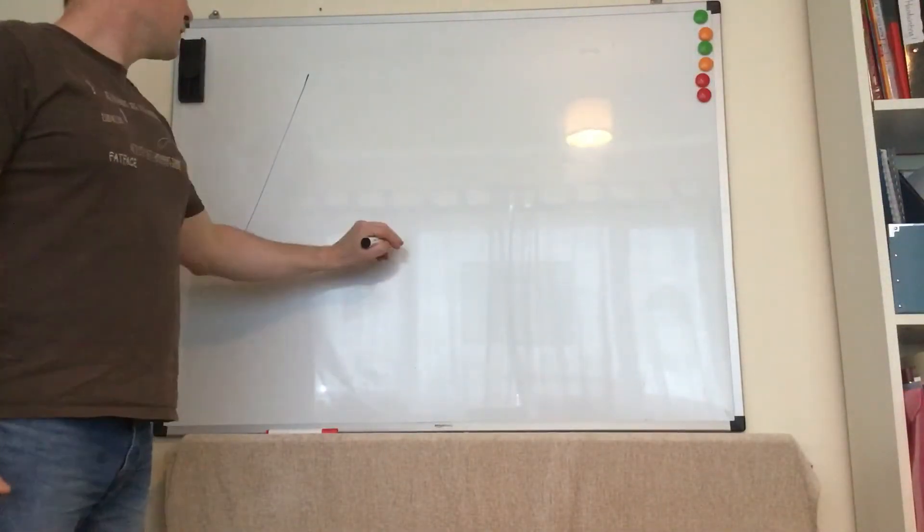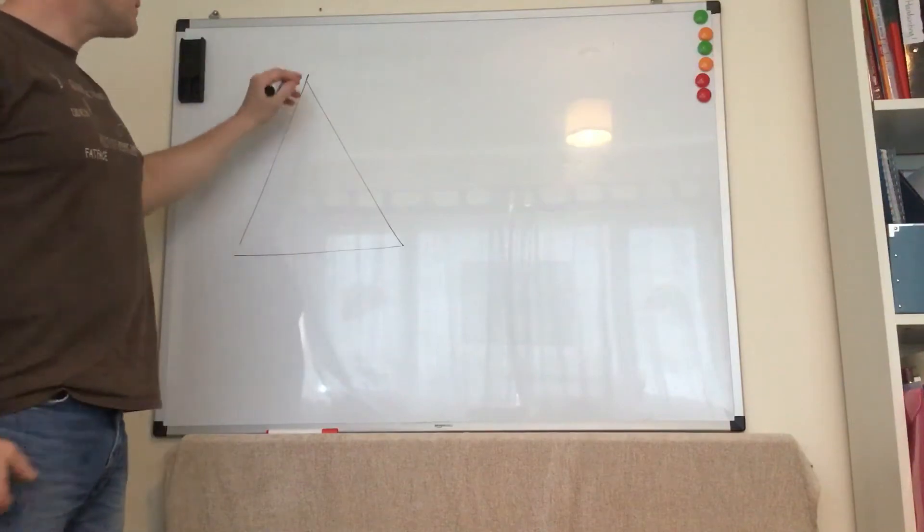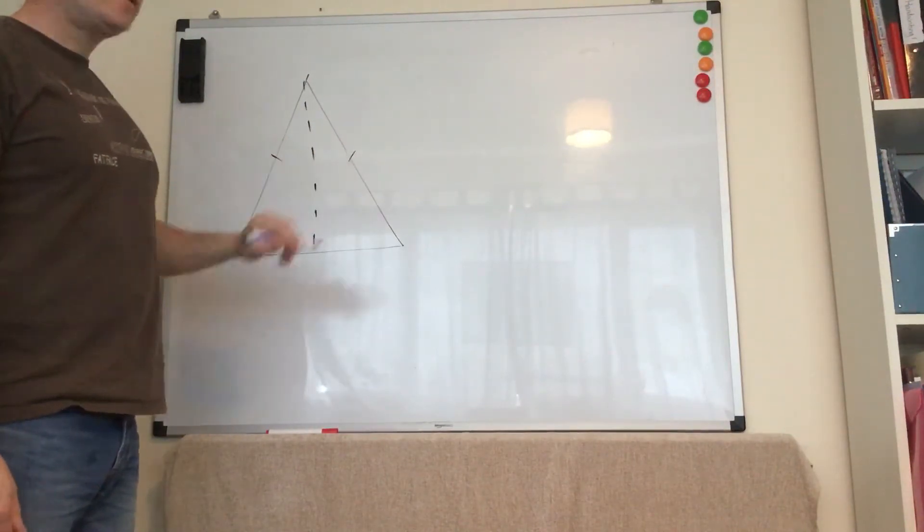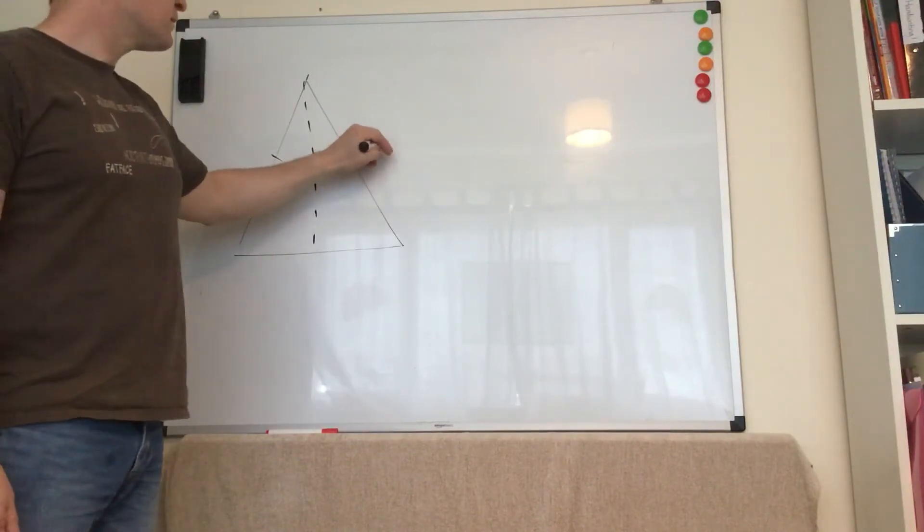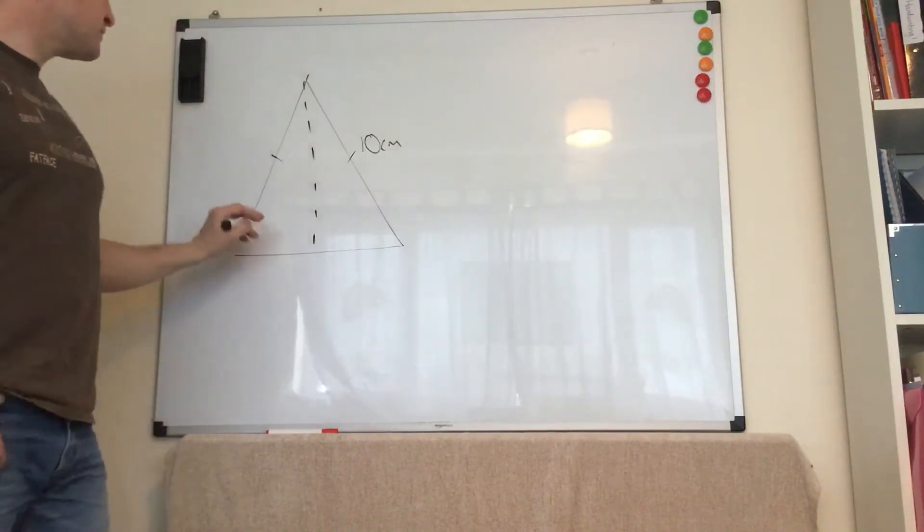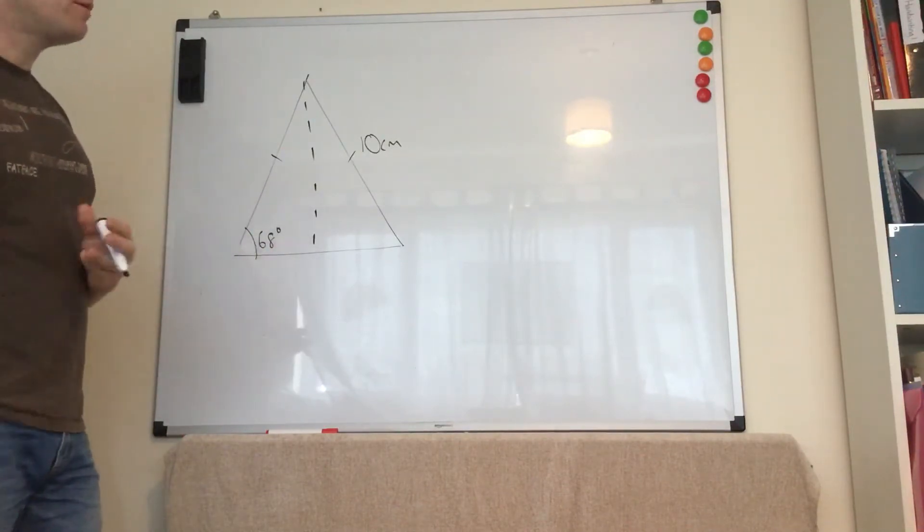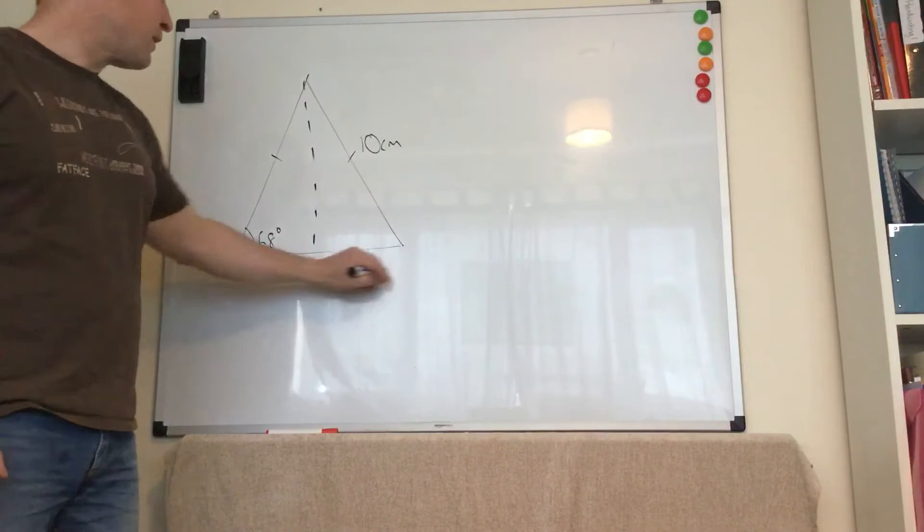Right, so the first question, you get a triangle that looks something like this with a dotted line down the middle. It's isosceles. The max size is 10 centimeters, and they've given me an angle of 68 degrees. I think last time I did it was 70, so it'll be somewhere in that ballpark. We have to work out x.